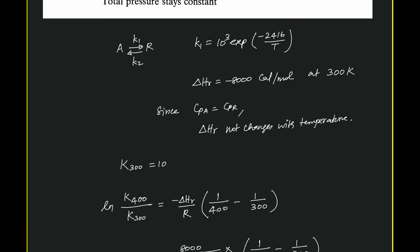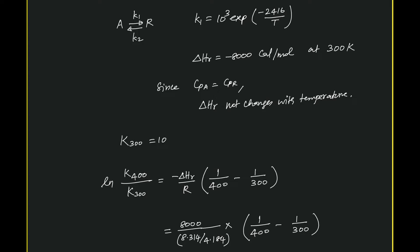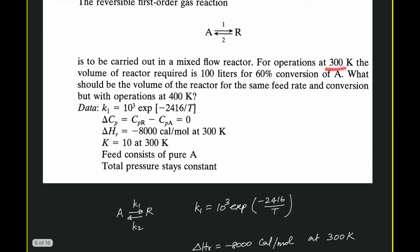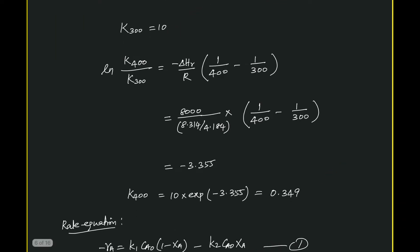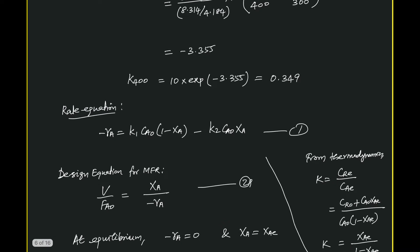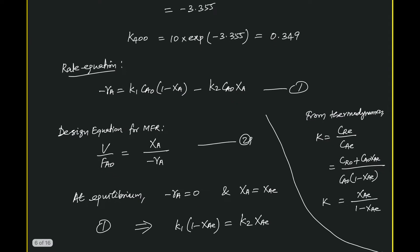K at one temperature is available, and using that we can get K at another temperature. The initial operation is at 300 Kelvin, and the second operation is at 400 Kelvin, so we have values of K at both 400 and 300 Kelvin — these are equilibrium constants. For the reversible reaction, the rate equation is: rate = K1·Ca − K2·Cr, which in terms of conversion takes a specific form.